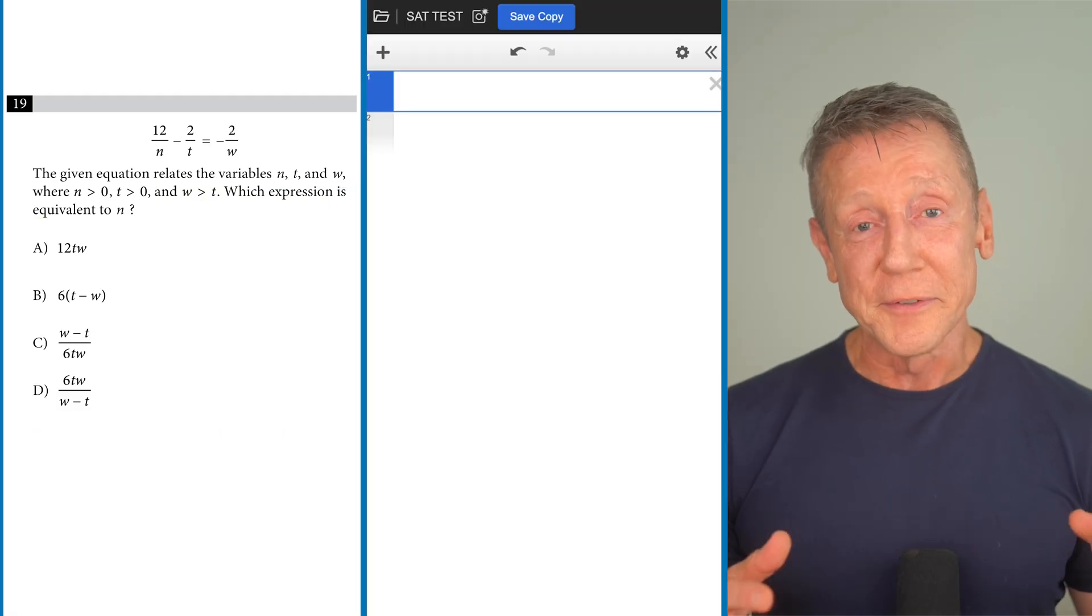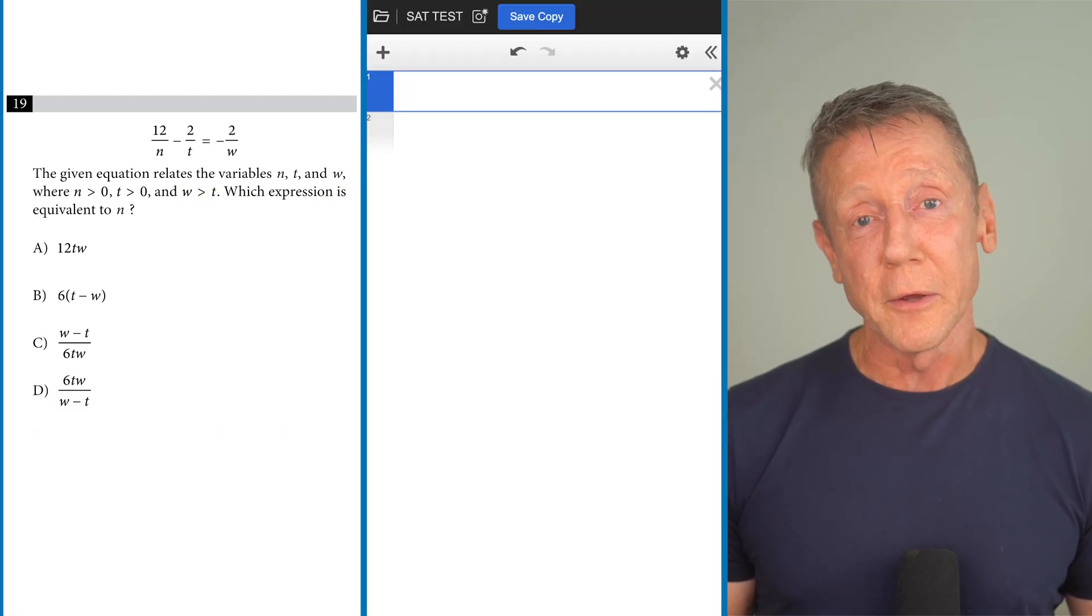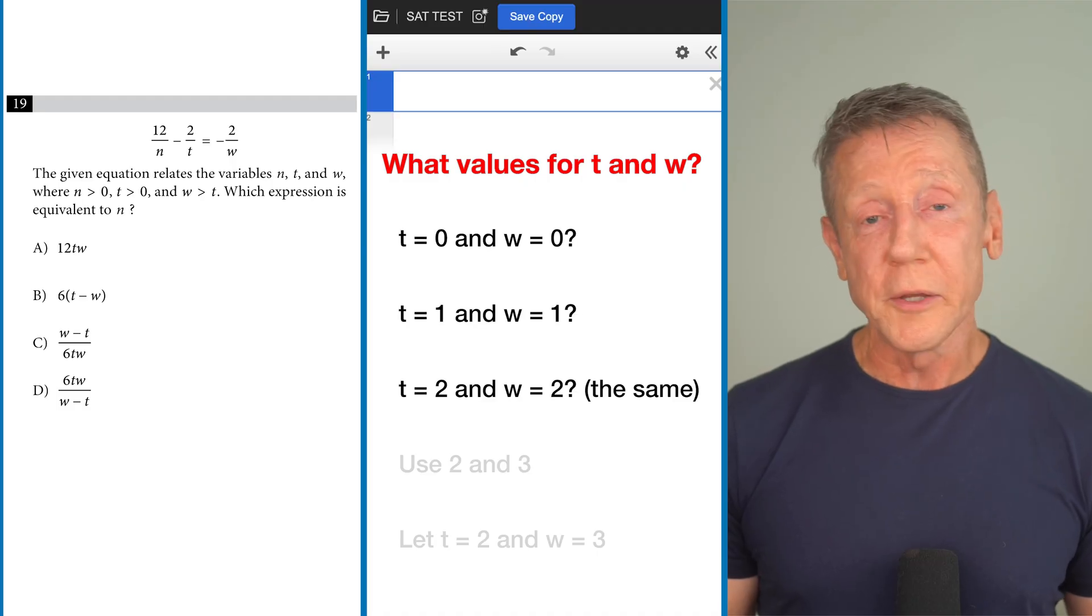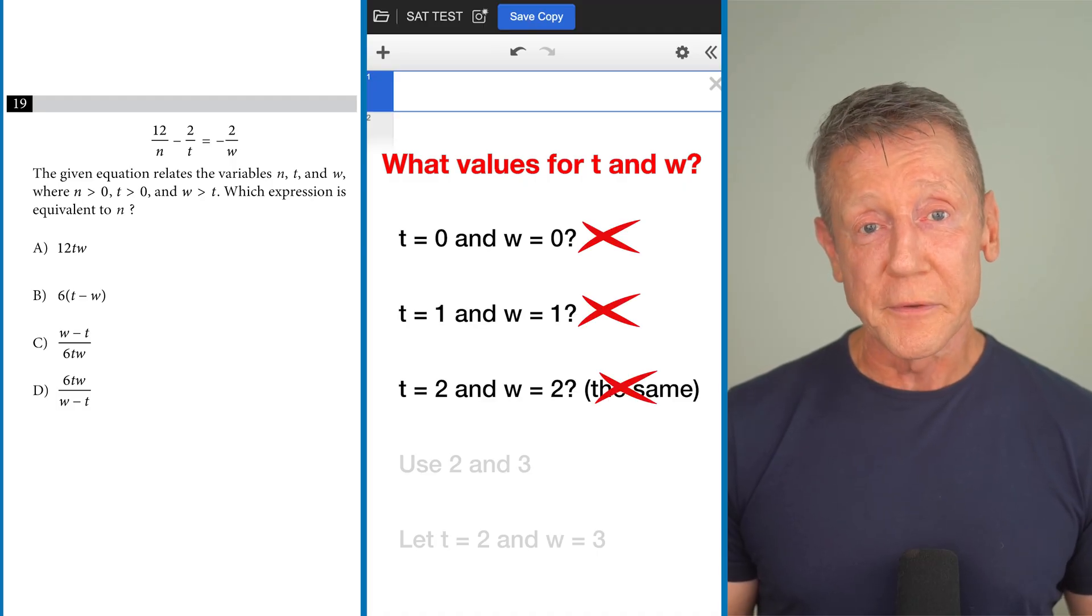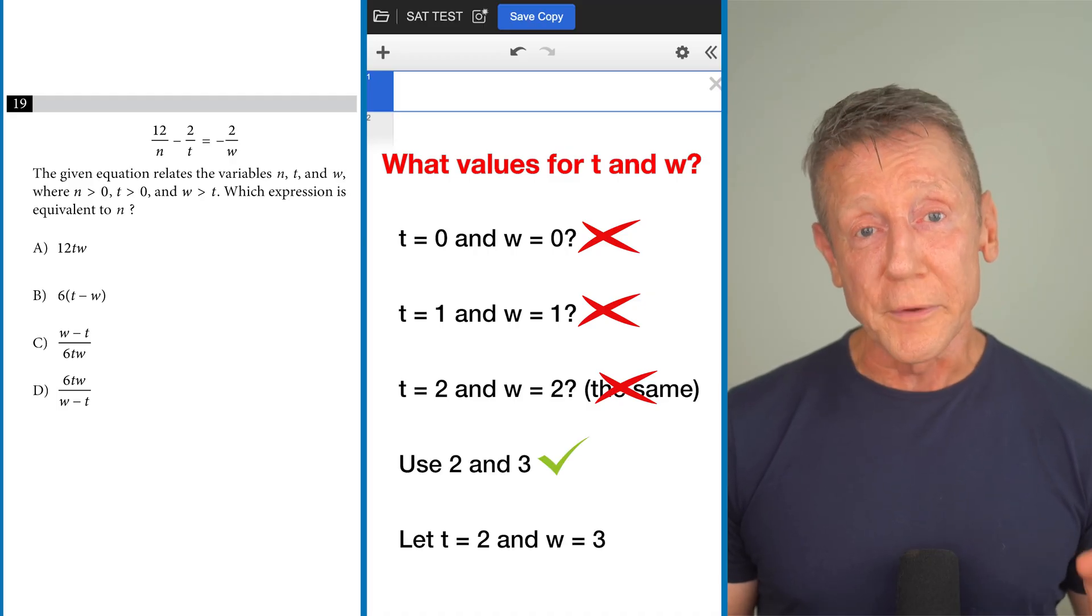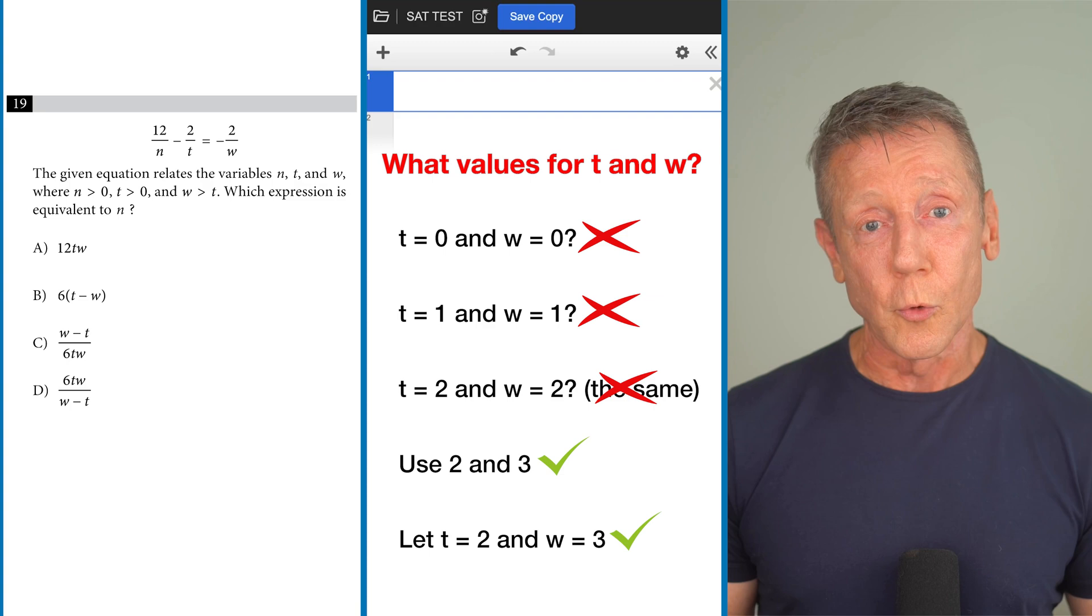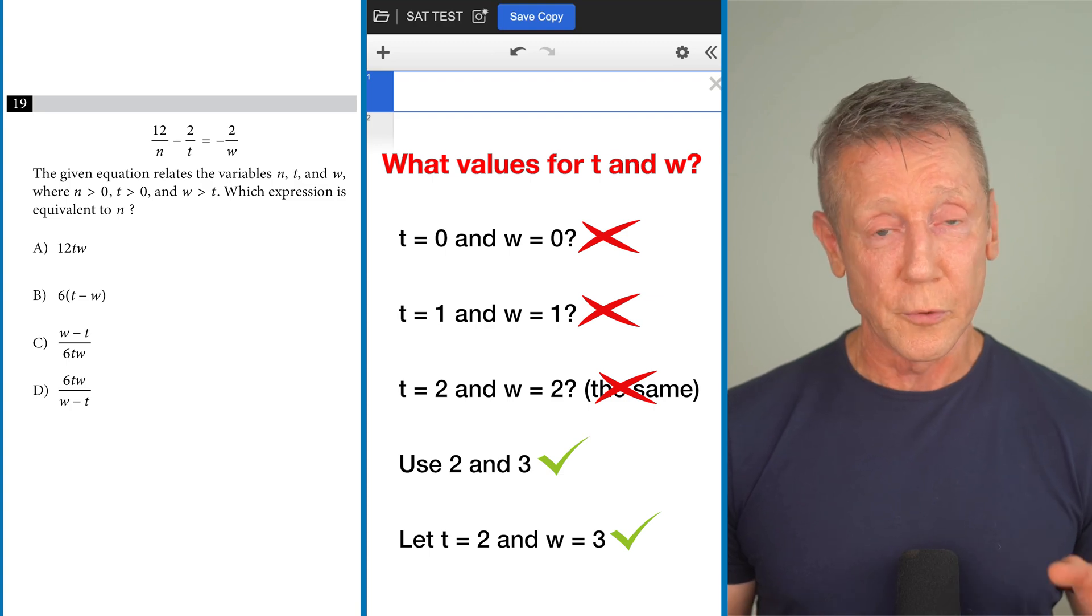We're going to start by typing the given equation into Desmos and substituting in values for t and w. We're not going to use 0, 1, or two numbers of the same because we can end up with undefined or the same value for more than one answer choice. We're going to use 2 and 3, assigning them to t and w in alphabetical order so it's easy to remember which one goes with which.